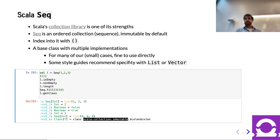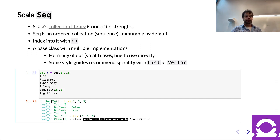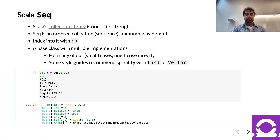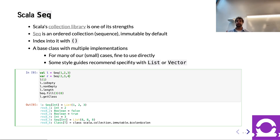Later on, when we do want a mutable collection, we'll use an ArrayBuffer as an example. The Seq itself is immutable, and the val is immutable. I could have a var, which means I can change what that var points to. But even if that var pointed to a Seq, that particular Seq itself would be unchangeable because the Seq is immutable.